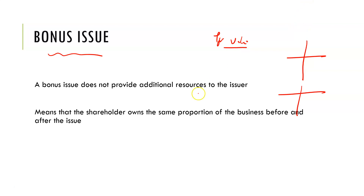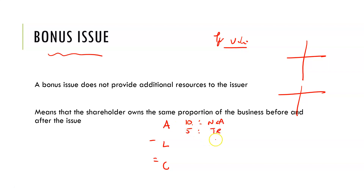For example, using the equation A minus L equals C: you have non-current assets of 10 million and trade receivables of 5, then current liabilities of 3, so net assets are 12. You have ordinary shares of 4 and retained earnings of 8, giving you this 12-12 balance.